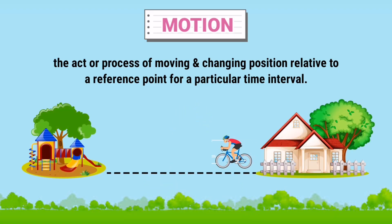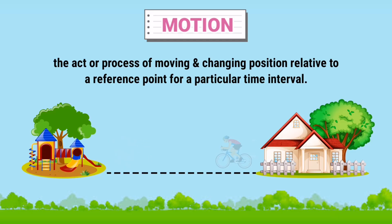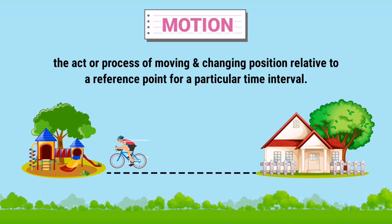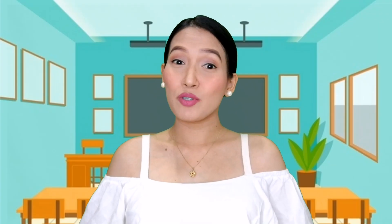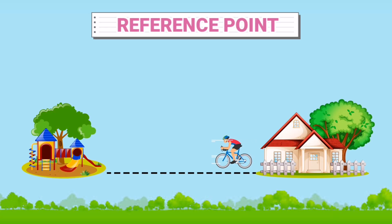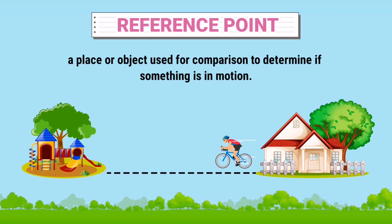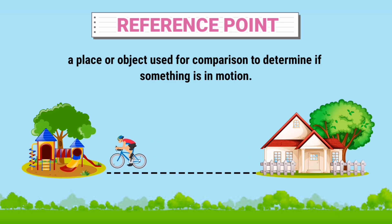Let's take a look at this example. Is the cyclist in motion? The cyclist is in motion because its position changes. When describing the motion of an object, we must first be able to tell exactly where it is positioned. In this case, we use a reference point. A reference point is a place or object used for comparison to determine if something is in motion. An object is said to be in motion if it changes position relative to a reference point.